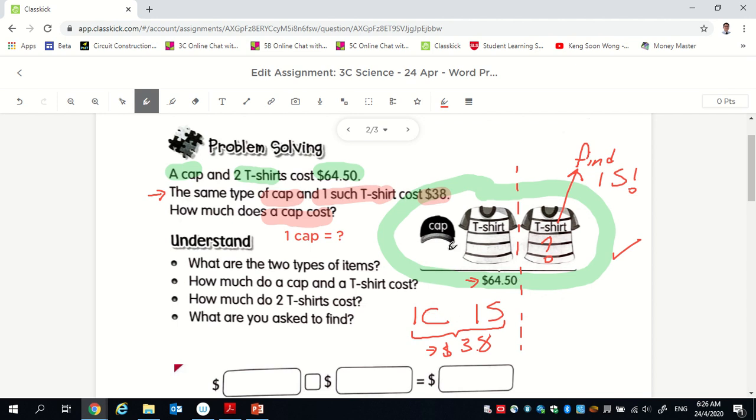Alright, so I just want to repeat again. What you have is two t-shirts, one cap, the $64.50. One shirt, one cap, $38. So you realize the difference between the two is only one t-shirt. So you can actually find the cost of one t-shirt. And once you know that, you know the cost of one t-shirt, you know the total for one shirt and one cap, you will be able to find the cap. So I'm not gonna do for you. I want you to try it out yourself.